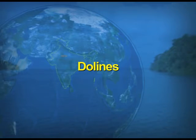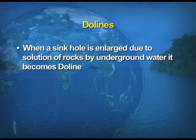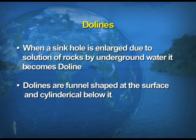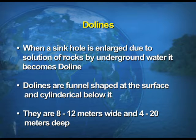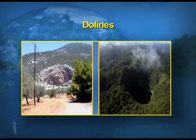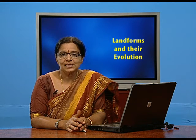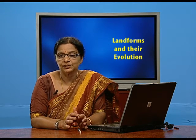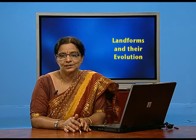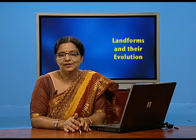When a sinkhole is enlarged due to the solution of rocks by underground water, it becomes a doline. Dolines are funnel-shaped at the surface and cylindrical below it, 8 to 12 meters wide and 4 to 20 meters deep. All the features discussed — sinkholes, swallow holes, and dolines — look almost similar: they are depressions, round and deep, formed by underground water, just taking different shapes and given different names.